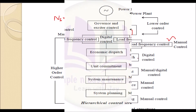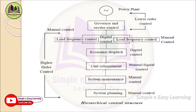Economic dispatch determines how to dispatch load in an economical manner using digital control. For example, if 6 units of 100 megawatts each are available and only 300 megawatts is required, the power can come from units 1-2-3, or 1-2-5, or 1-3-4, and many other combinations. Out of all those probabilities, we determine which combination is most economical using available methods — this is called economic dispatch, done by digital control.